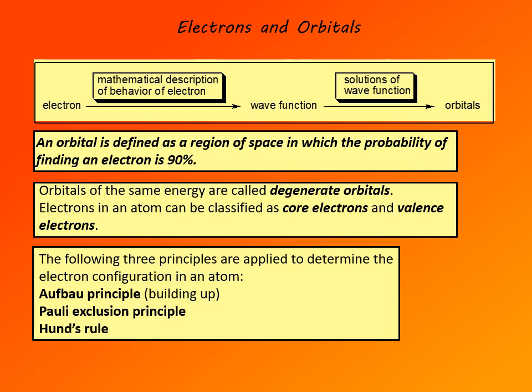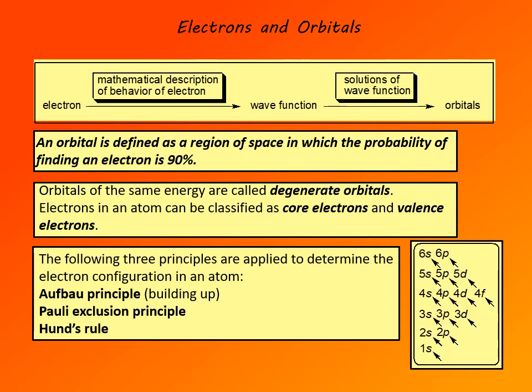And finally, Hund's rule, which tells us that in case of degenerate orbitals, electrons fill those orbitals first one per orbital. So orbitals are first half filled, and only if all of the degenerate orbitals are half filled, then electrons start to pair up. And here is this mnemonic, which I hope you're all familiar with, how these three principles are applied to determine electron configuration of an atom.